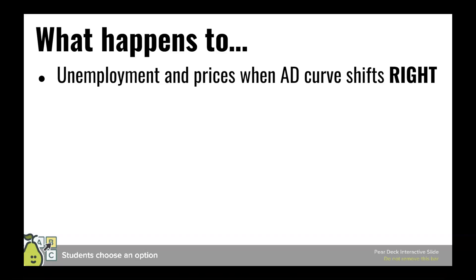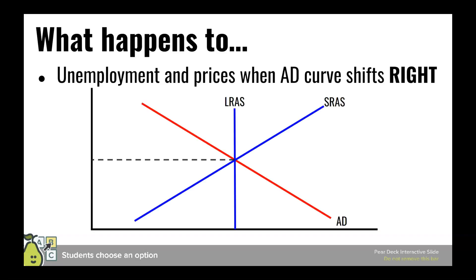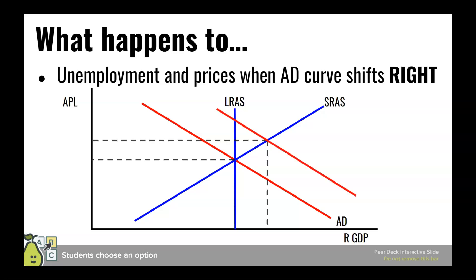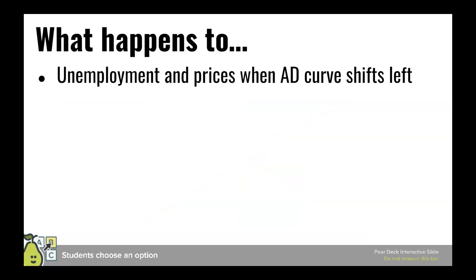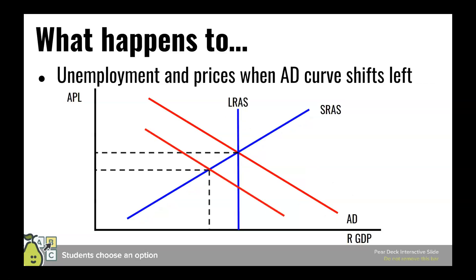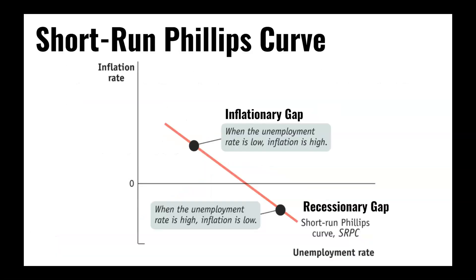We can see that relationship graphically. When aggregate demand shifts to the right, we've got higher prices, but output is beyond potential output, which means we're hiring more people than before, so unemployment should be dropping — high price, low unemployment. And if aggregate demand shifts to the left, we would see a decrease in output, meaning we're hiring fewer people than at potential output, so higher unemployment but prices are coming down. We can track all of the potential combinations of inflation rate and unemployment rate and put them on a graph to get the short-run Phillips Curve.